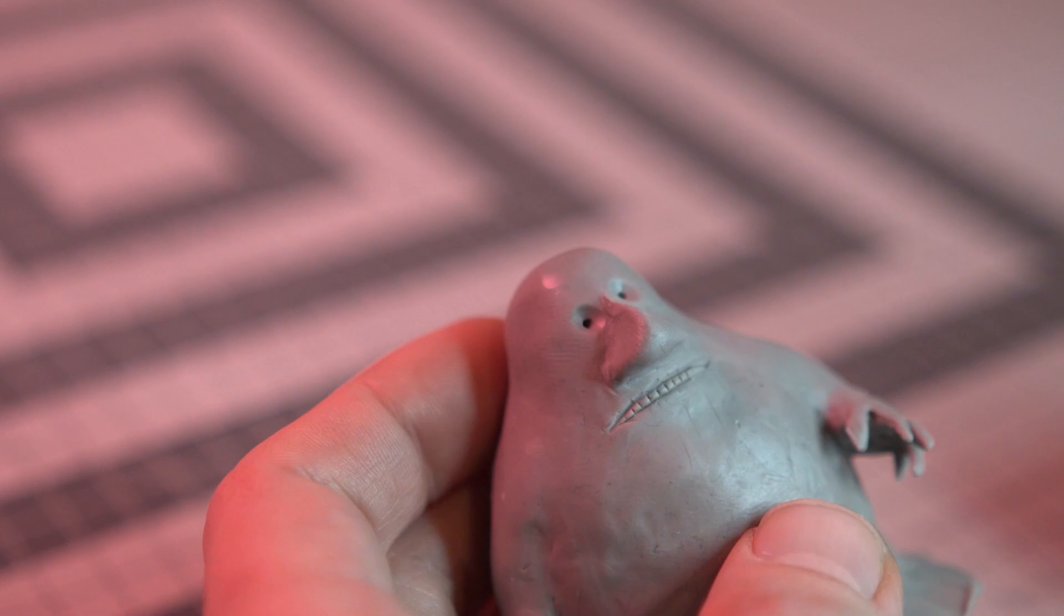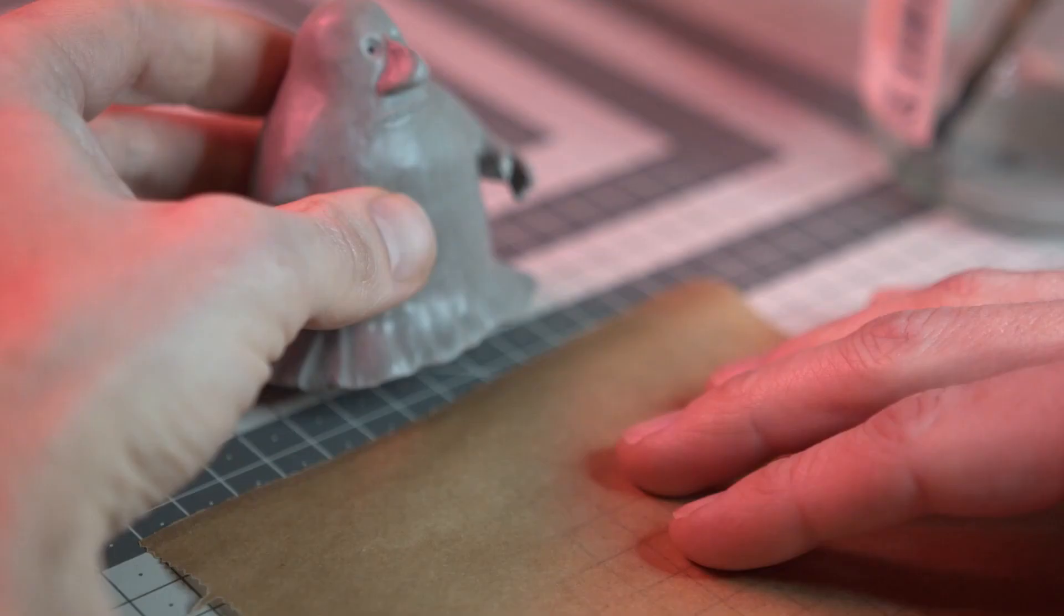The whole model is brushed with isopropyl alcohol before baking to remove all the fingerprints and tool marks.